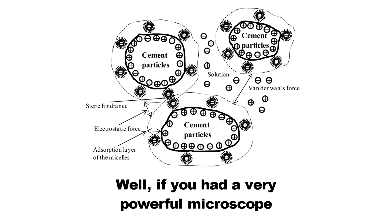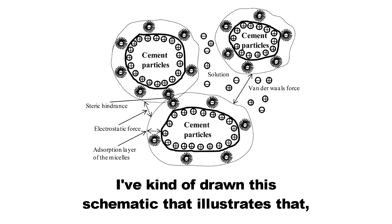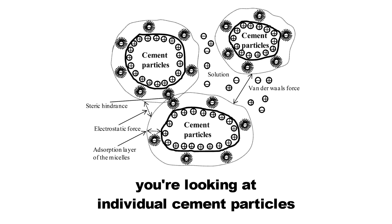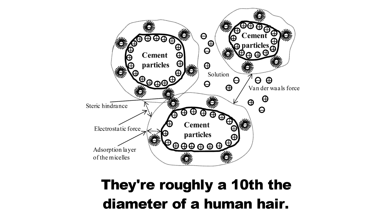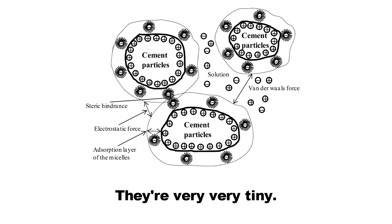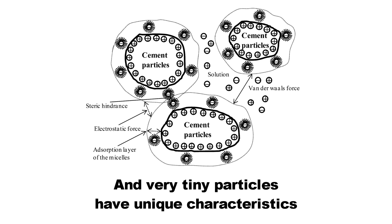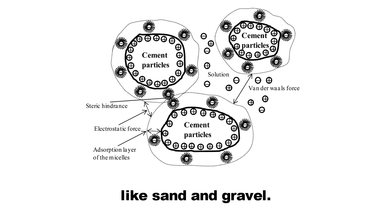If you had a very powerful microscope and you could look inside the concrete, I've drawn a schematic that illustrates that. You're looking at individual cement particles floating in water. Cement particles are very, very fine — roughly a tenth the diameter of a human hair. They vary in size, just like sand particles and gravel particles vary in size. They're very, very tiny.